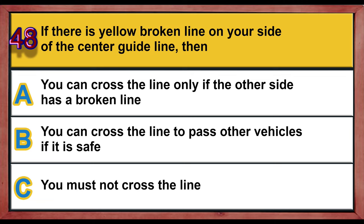Question 48. If there is a yellow broken line on your side of the center guideline: A. You can cross the line only if the other side has a broken line. B. You can cross the line to pass other vehicles if it is safe. C. You must not cross the line. Correct answer is B: You can cross the line to pass other vehicles if it is safe.